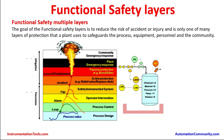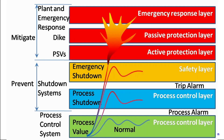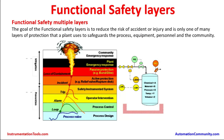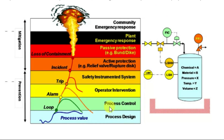Functional safety covers multiple layers. The goal of functional safety layers is to reduce the risk of accident or injury — the many layers of protection that a plant uses to safeguard the process, equipment, personnel, and the community. The different layers are shown in different colors. This is a normal process operating in steady mode. Plants are designed to operate in this steady mode. Here we have the process control — loop control and measurement — which is done by the BPCS, basic process control system, shown in green.